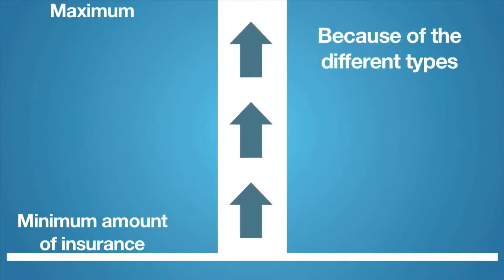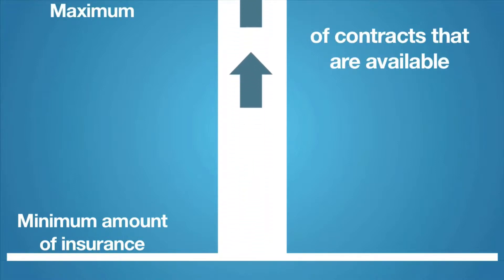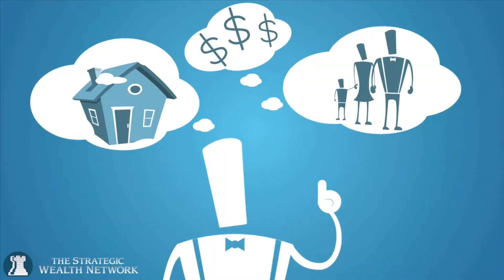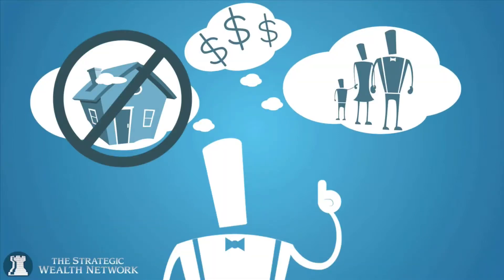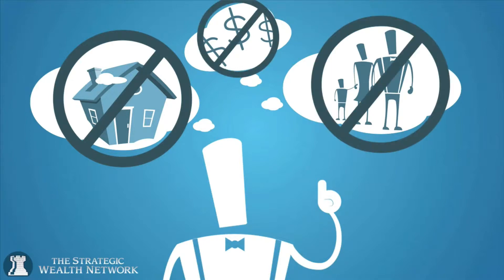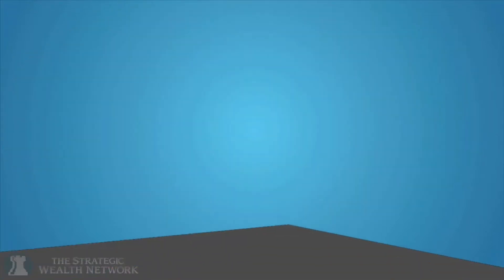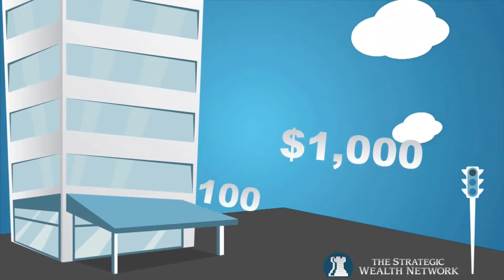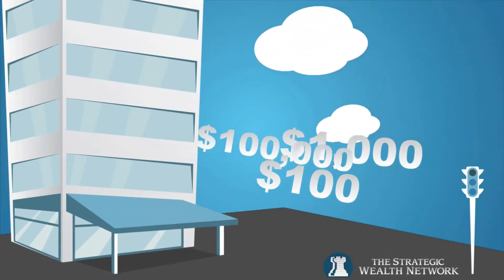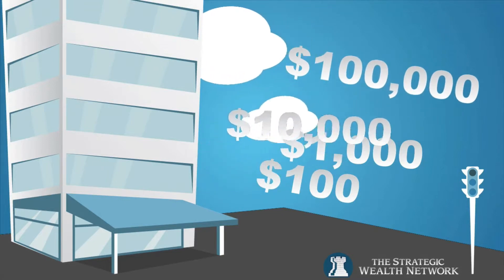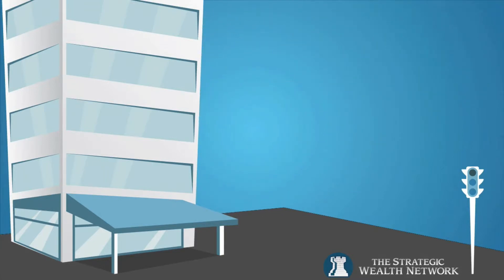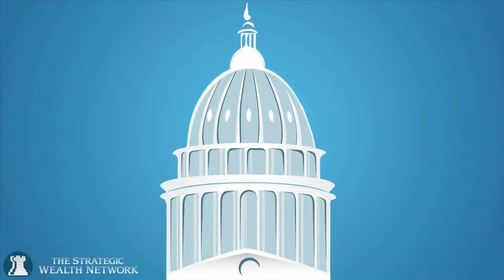Why? Because of the different types of contracts that are available to cover the death benefit. An example of a minimum premium contract is cheap term insurance that gives you no economic living benefits. Insurance companies have actuaries and accountants that calculate the least amount of premium they can charge to cover your death benefit and still make a profit. The maximum premium available to deposit into a contract is limited by the federal tax code.